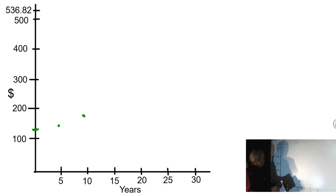At 15 years, it's $253. So that's about $250, about right there. And at 15 years, you're about right there. And at 20 years, it is $325. So it's $325. It's about right there.